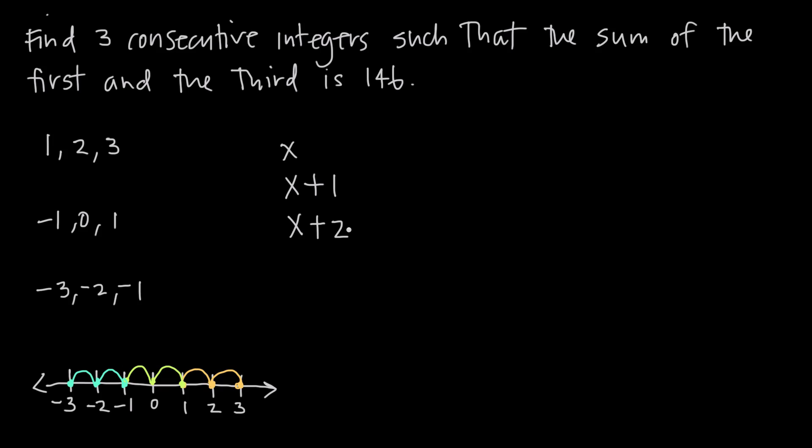This should make sense to us. We can always test ourselves because if we pretend that our first integer is 1, as in this consecutive integer series here, then we're going to plug in 1 for x and see what we get.